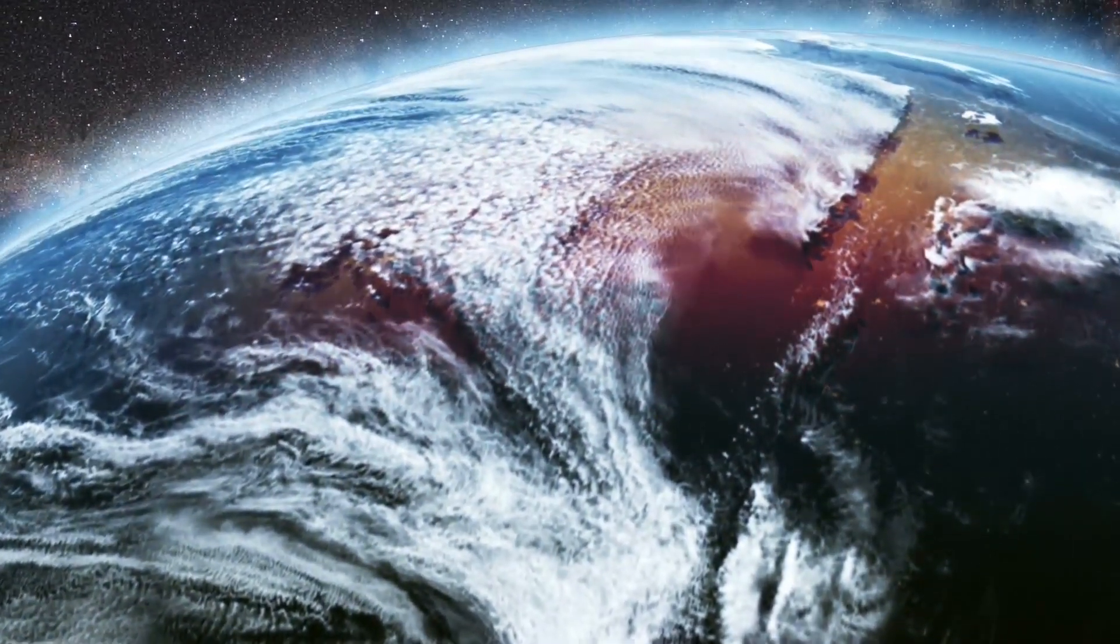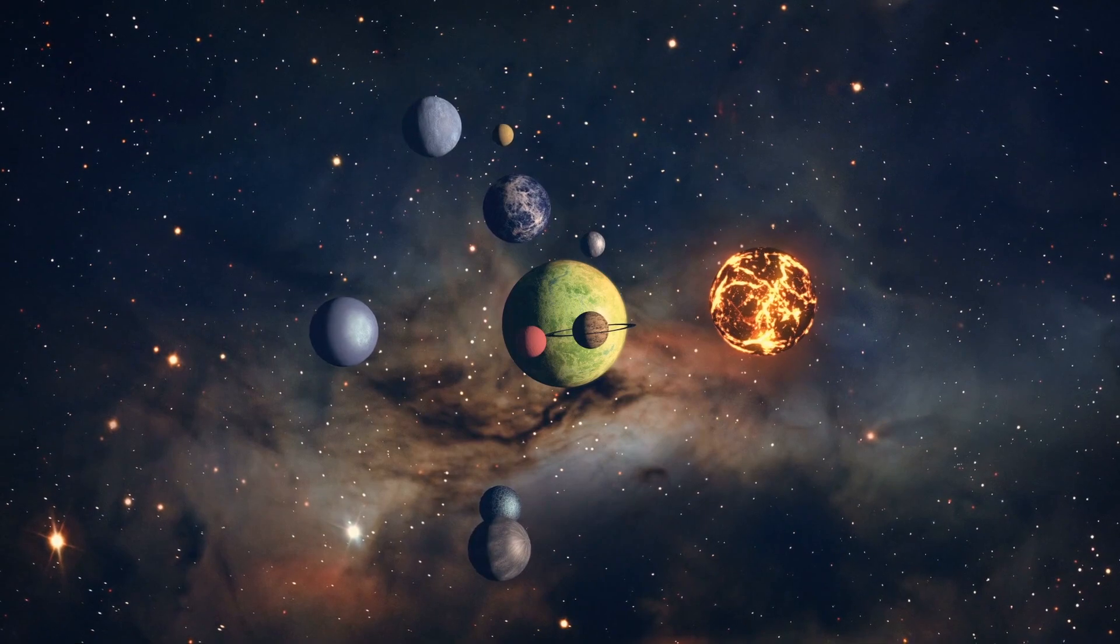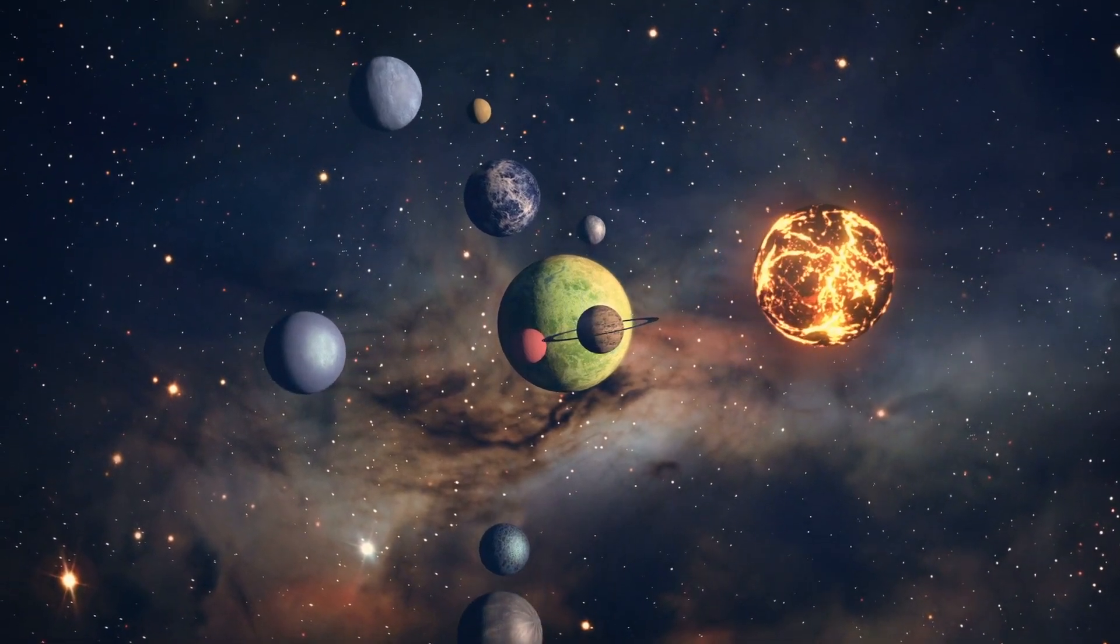All the planets in our solar system, as well as our sun, are spheres. And actually, most larger objects are spheres, and you've got gravity to thank for that.